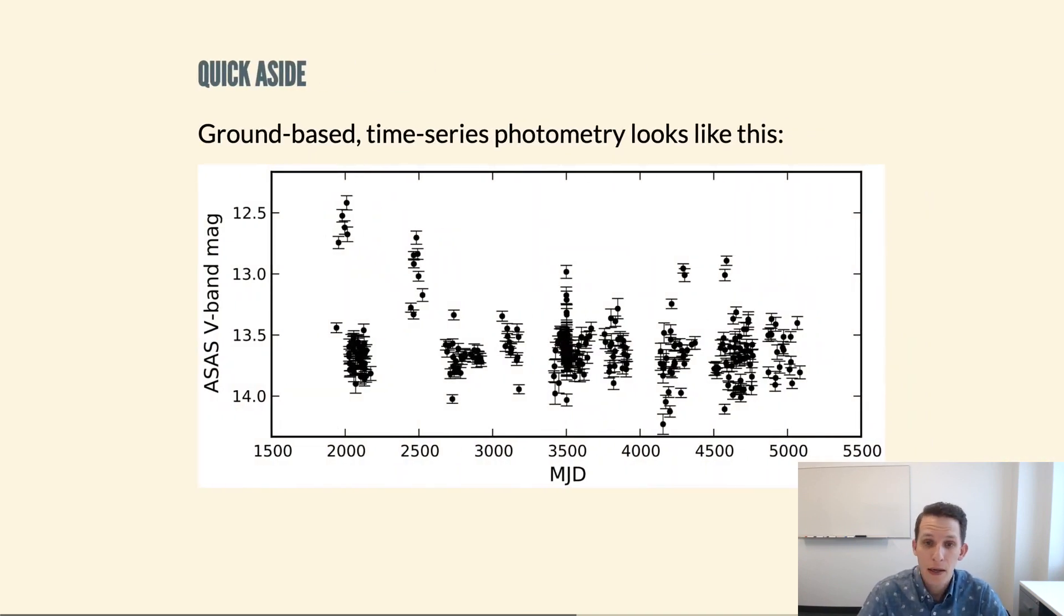As a very quick aside, I just want to talk a little bit about the different types of time domain data that we can achieve. Standard ground-based time series photometry looks something like this. So here you see a light curve, it extends over several years. There's many observations within that light curve, a light curve being a measurement of a source's flux as a function of time.